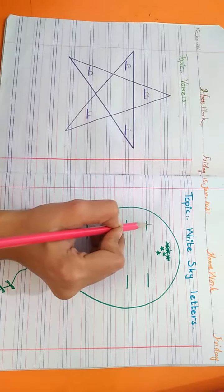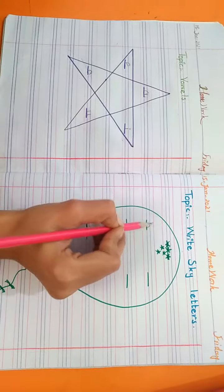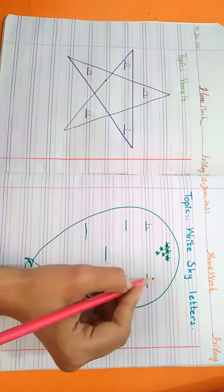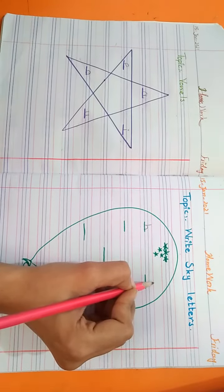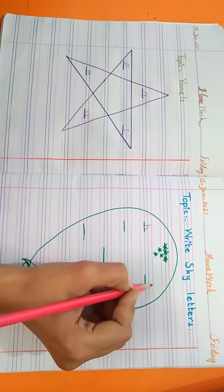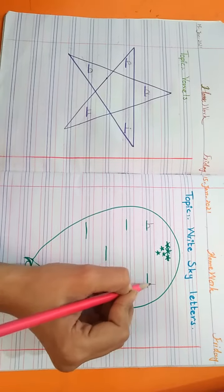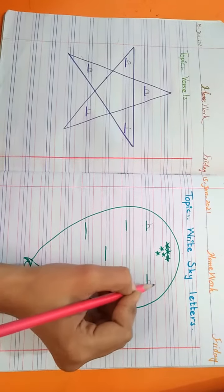The first is B. The first sky letter is B. Sky letters are those letters which we write on upper three lines. The second is D.